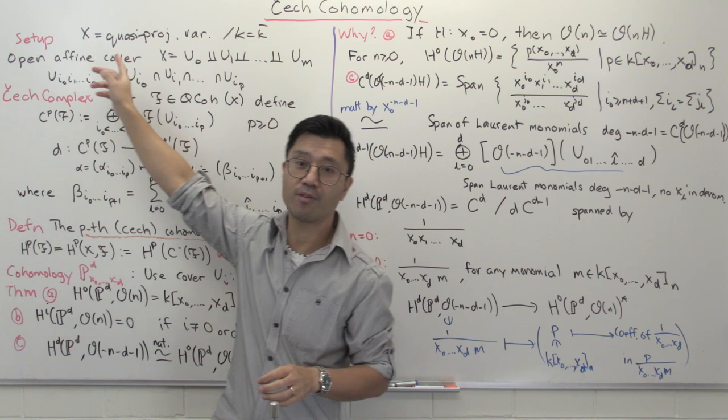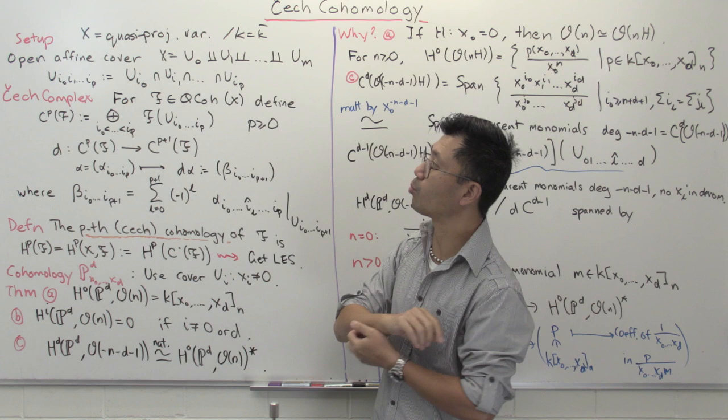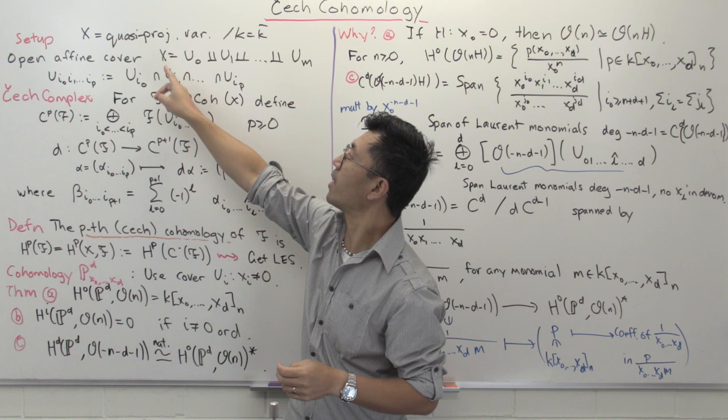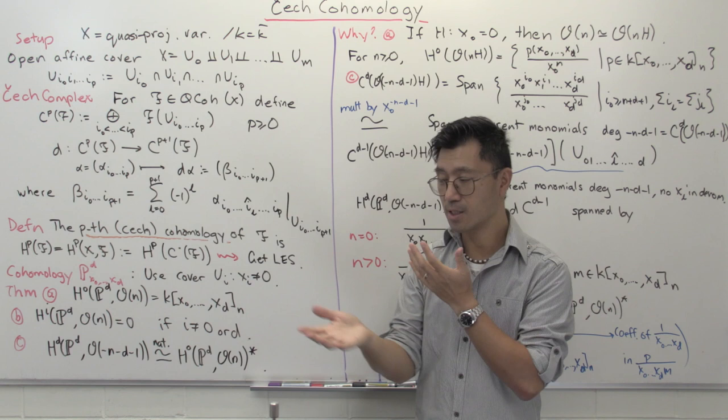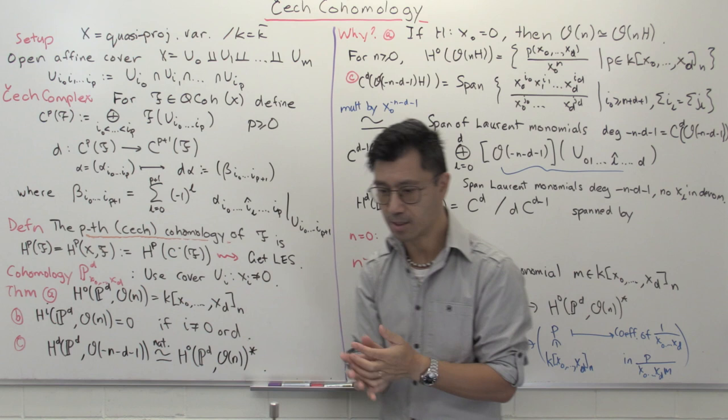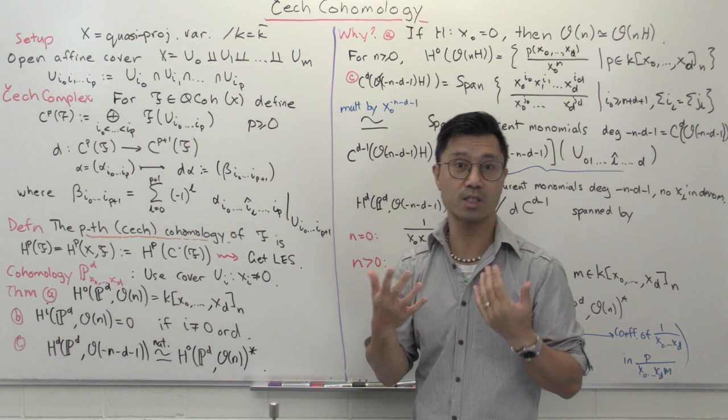Let's look at the setup. This applies when X is a quasi-projective variety over some algebraically closed field. To work with Čech cohomology, we need some open affine cover, just as we defined it in the case for curves. We write X as the union of open affines U₀ up to Uₘ. In the case of curves you just need two of them. If you're in the case of a projective variety of dimension d, you'll need d plus one of them, which follows easily from the fact that projective space itself has an open affine cover consisting of d plus one affine spaces.